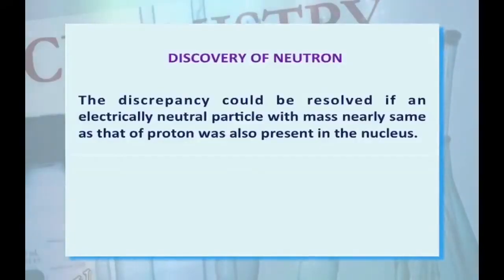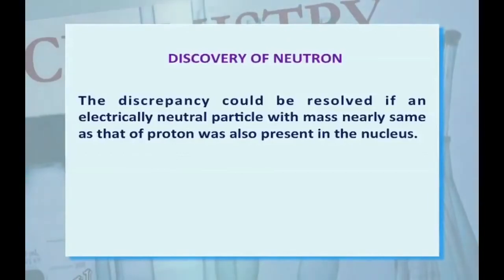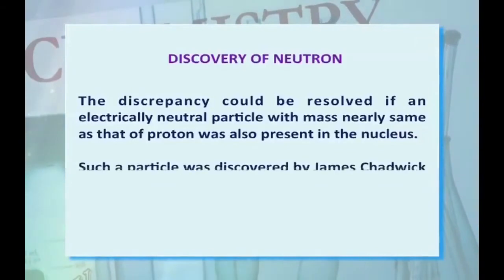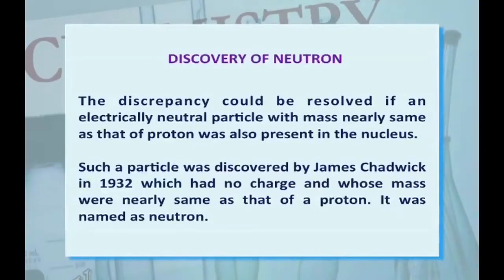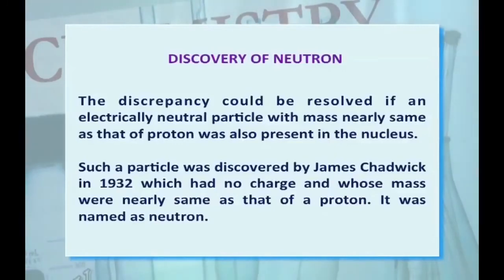Discovery of Neutron: The discrepancies could be resolved if an electrically neutral particle with mass nearly the same as that of a proton was also present in the nucleus. Such a particle was discovered by James Chadwick in 1932, which had no charge and whose mass was nearly the same as that of a proton. It was named the neutron.